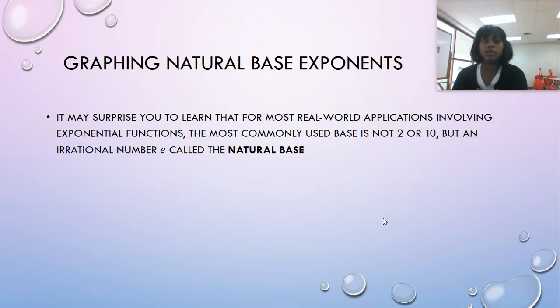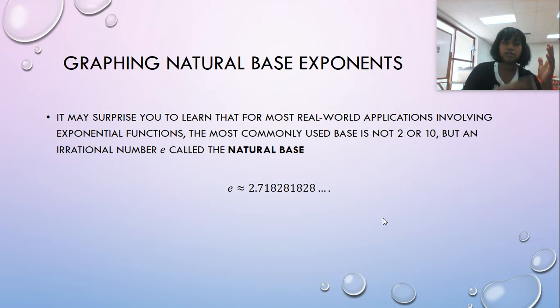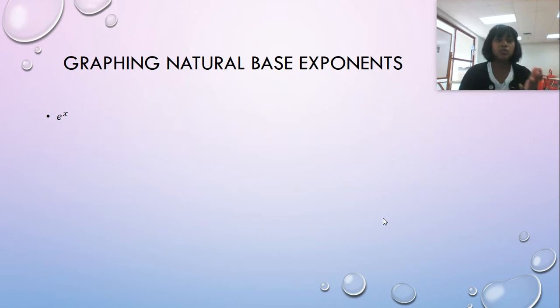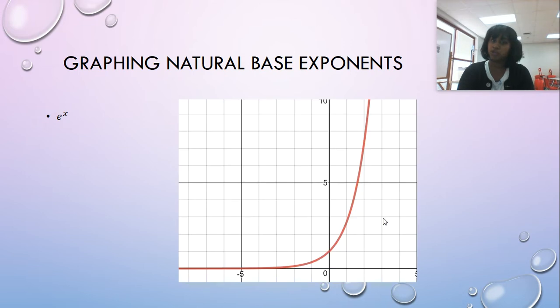So it's an irrational number e. We call it the natural base. It's approximately 2.718281. It is irrational though. And we represent it as e to the x, which looks like this. Well, guess what? I can also do e to the 4x or e to the negative x plus three or one half e to the x.